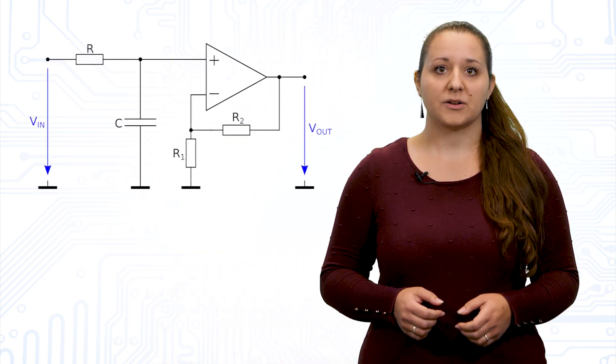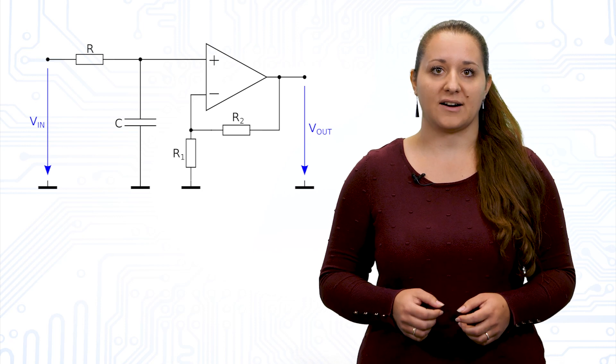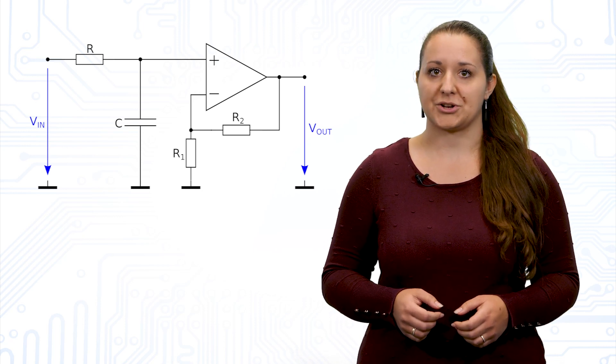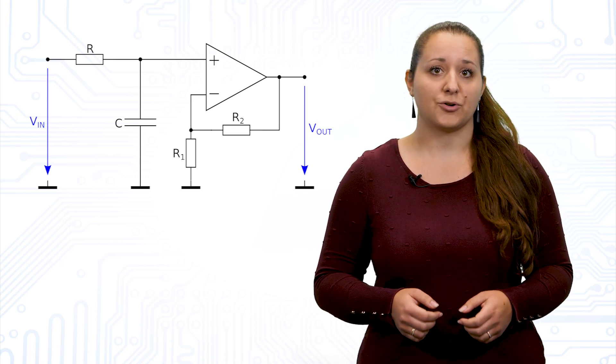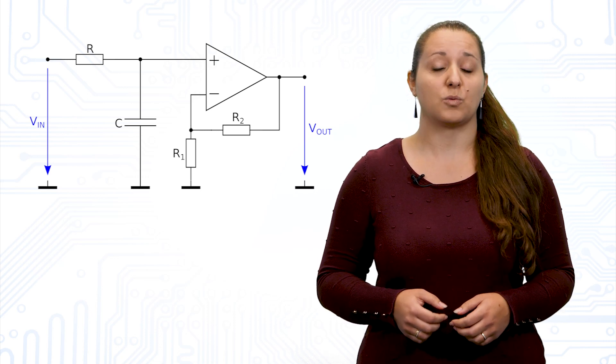Let's start where we left off in our last video on this topic. An active first-order filter typically consists of an RC element and an operational amplifier. In this case, it is an active first-order low-pass filter with gain.